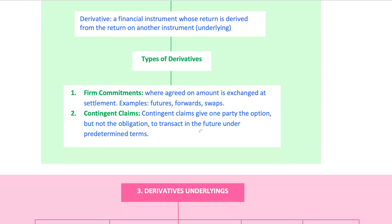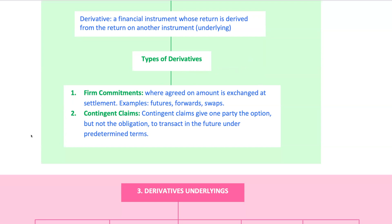For example, in a forward contract, say you agree today to buy 100 shares of ABC Incorporation for $50 each three months from now. No money exchanges hands right now — it's just an agreement. But on the settlement date, if ABC Incorporation's share price rises above $50, you'll benefit since you're locked into a lower price. However, if it falls, you'd still have to buy at $50, taking a loss. This kind of derivative allows you to plan ahead based on your expectations of price movements.